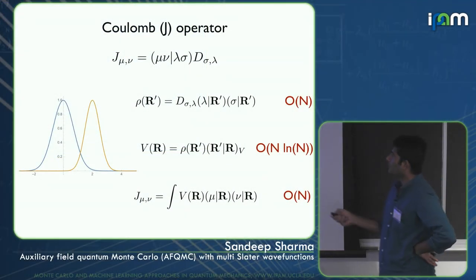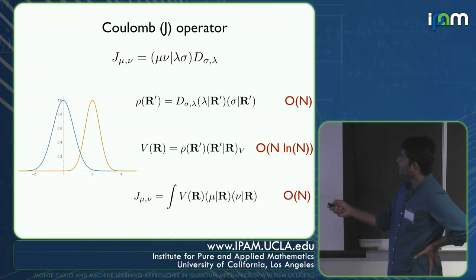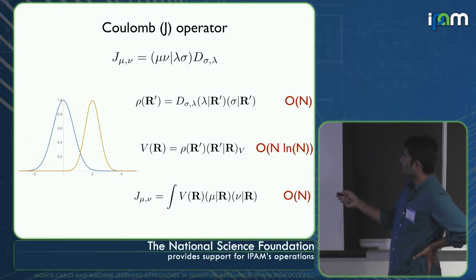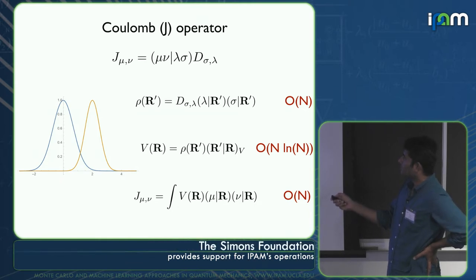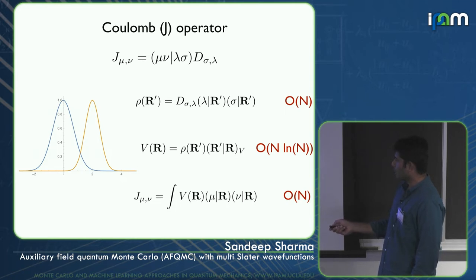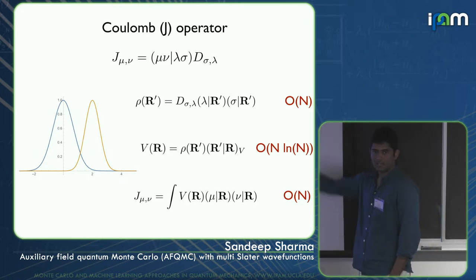For Coulomb, you take the density matrix σλ, multiply with λ(r') and σ(r') to get the density at r' — order N because both λ and σ are local orbitals. Then use FFT to calculate the potential on the entire grid at O(N log N). After getting the potential, you calculate the Coulomb matrix, again exploiting locality. The whole Coulomb calculation is order N.